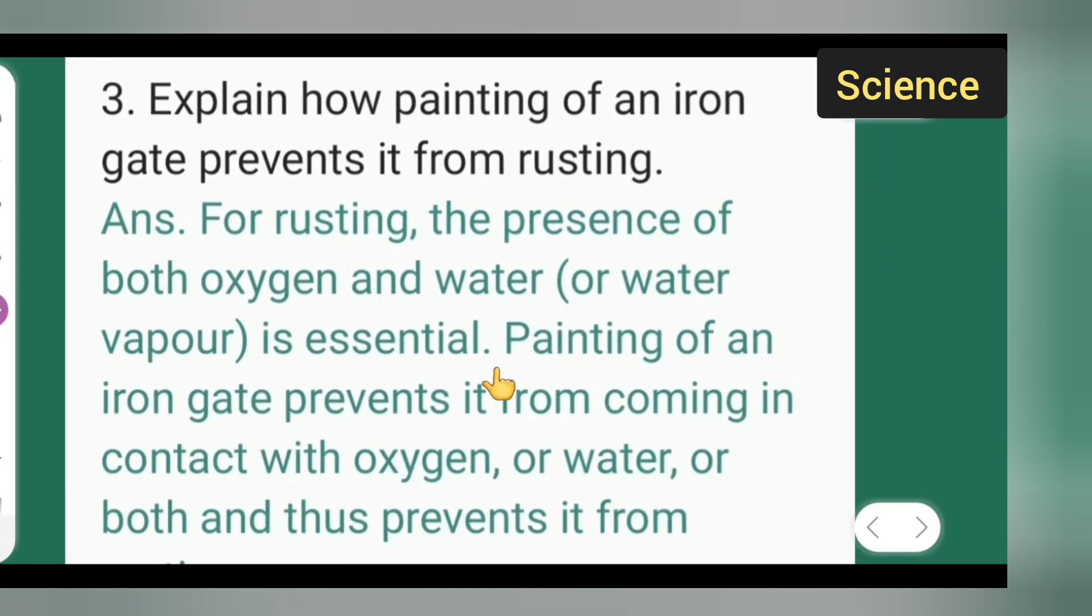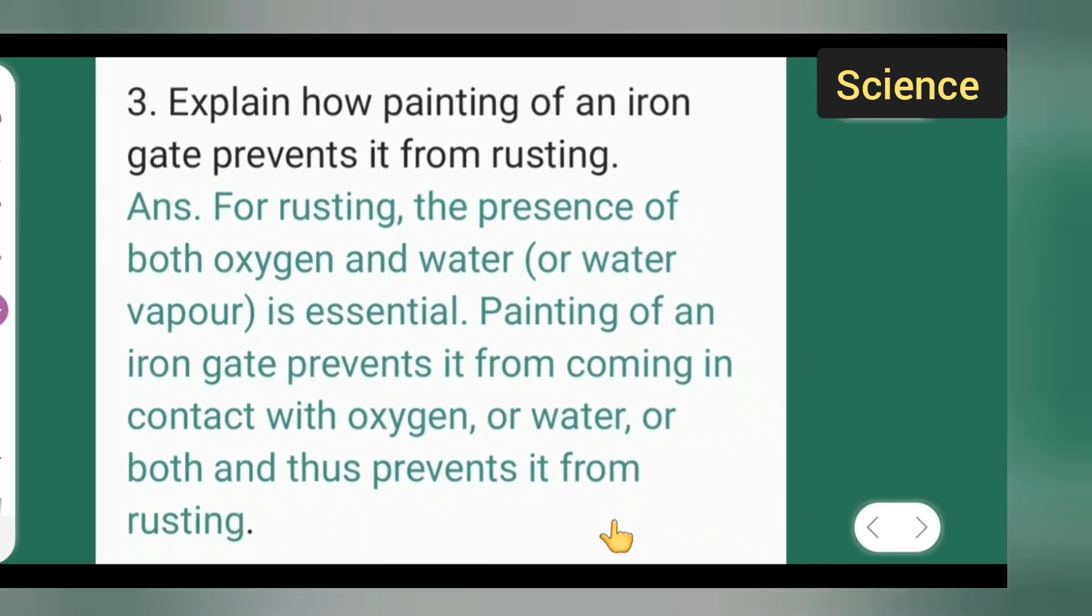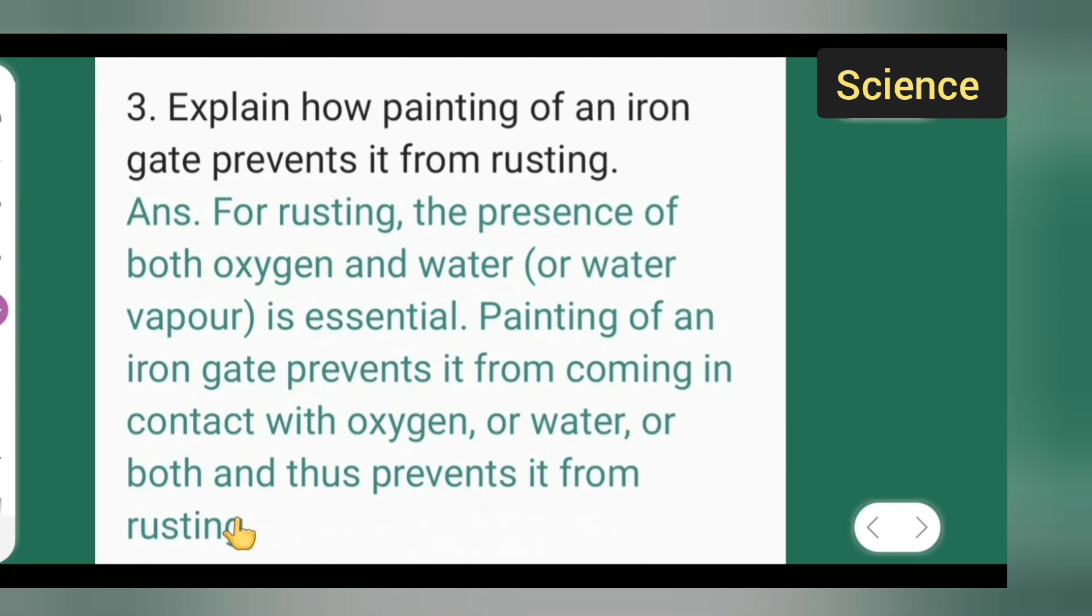Painting of an iron gate prevents it from coming in contact with oxygen, or water, or both, and thus prevents it from rusting.